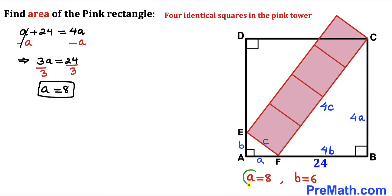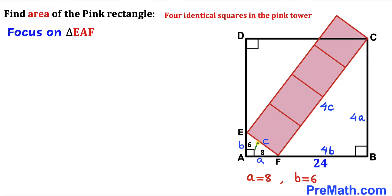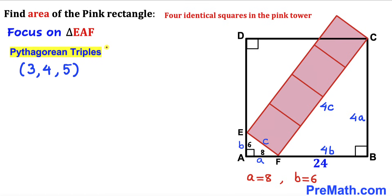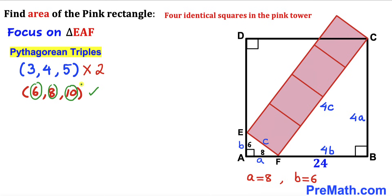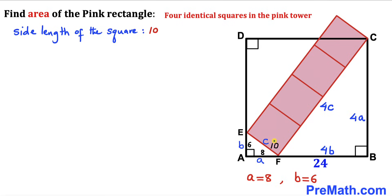Focusing again on right triangle EAF, we have a = 8 and b = 6. Now we calculate c using Pythagorean triplets. Recalling the 3-4-5 triplet and multiplying all values by 2 gives us 6, 8, and 10. Since our legs are 6 and 8, the hypotenuse c is 10 units. Therefore the side length of each square is 10 units.